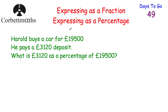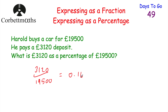This is a calculator question. Harold buys a car for £19,500 and pays a £3,120 deposit. What is £3,120 as a percentage of £19,500? First express as a fraction: 3,120 over 19,500. Then divide using the calculator: 3,120 divided by 19,500 equals 0.16. Multiply by 100 to get 16%. Make sure you put the percentage sign on the end. So £3,120 is 16% of £19,500.